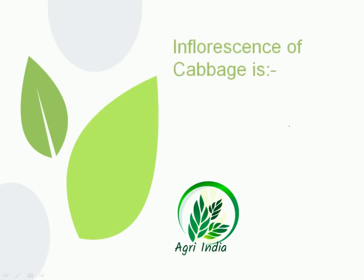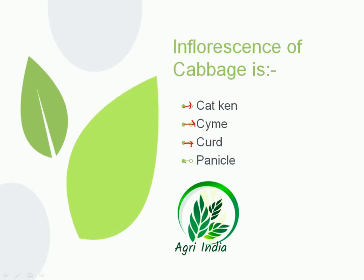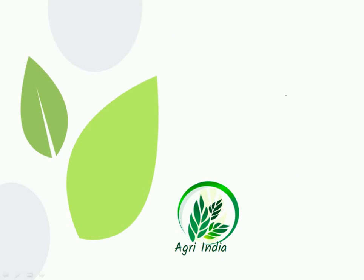Next question: the inflorescence of cabbage is known as — options are catkin, corymb, curd, and panicle. Catkin is the inflorescence of cabbage. Corymb is the inflorescence of cauliflower. Curd is not an inflorescence but is the edible part of cauliflower. Panicle is the inflorescence of rice. The correct option is catkin.